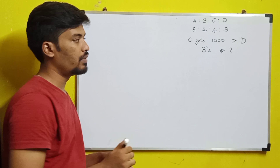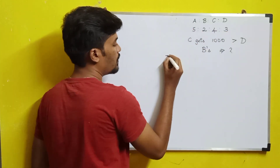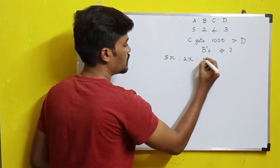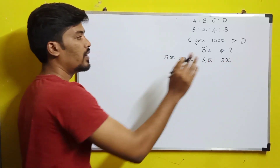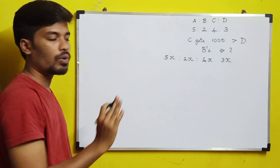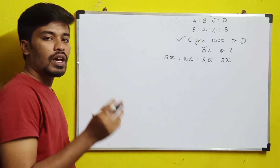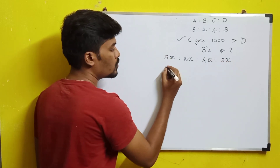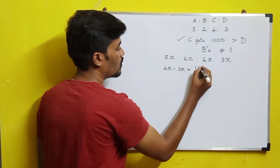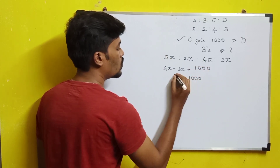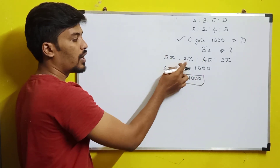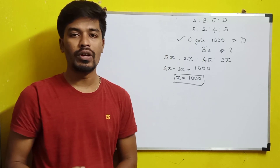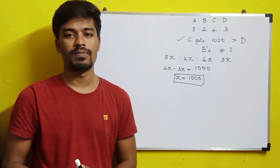We express the shares as 5X, 2X, 4X, and 3X. Since C gets Rs.1000 more than D, we have 4X minus 3X equals 1000, so X equals 1000. B's share is 2X, so B's share is 2 × 1000 = Rs.2000. So Rs.2000 is the correct answer for the second question.